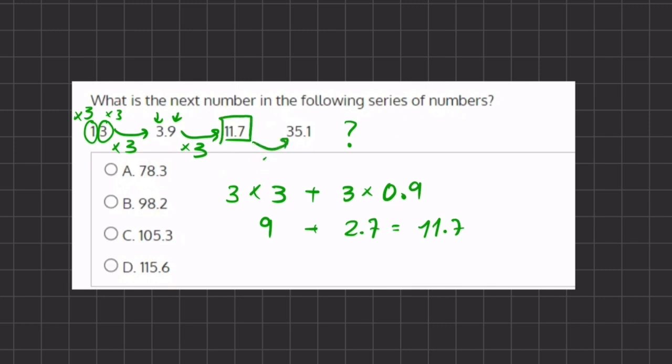Alright, so it seems that our pattern is multiplying by 3. And if we multiply 35.1 times 3, let's break it up just like we did.